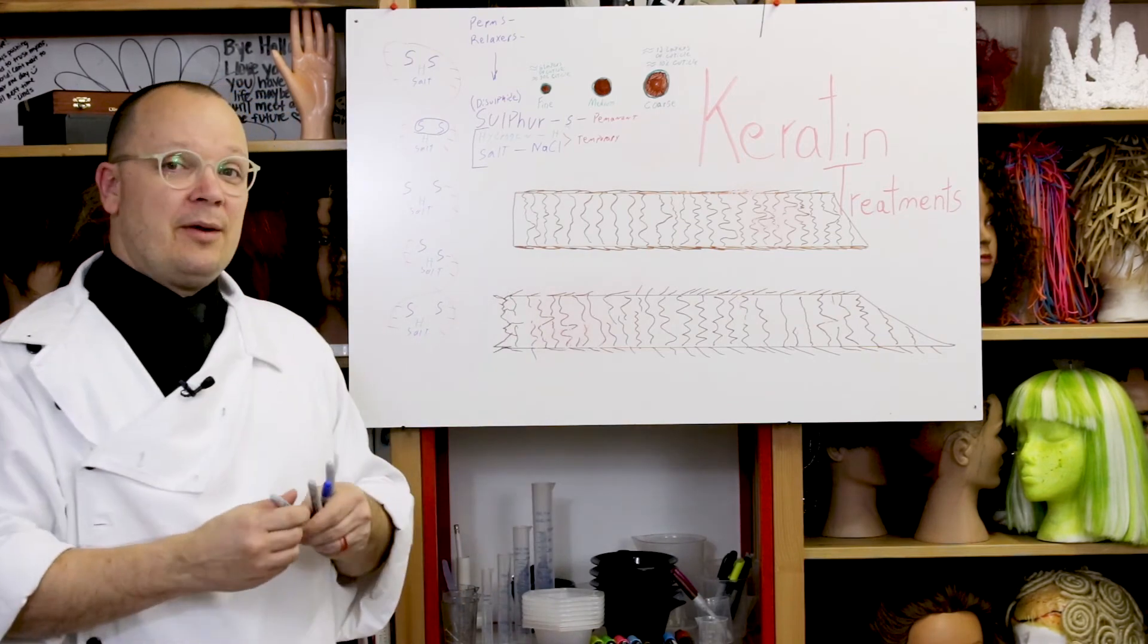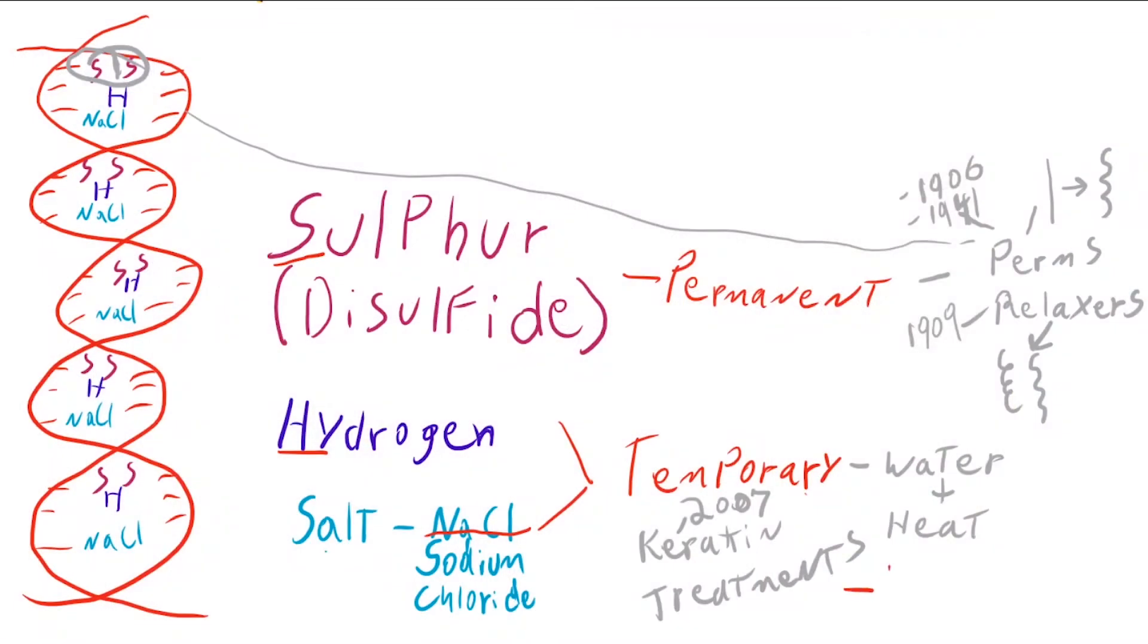But they are still temporary. Because keratin treatments work with that temporary bond, keratin treatments are temporary. These new generations of keratin treatments can last anywhere from one to six months and then they wear away.